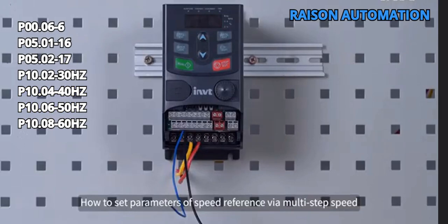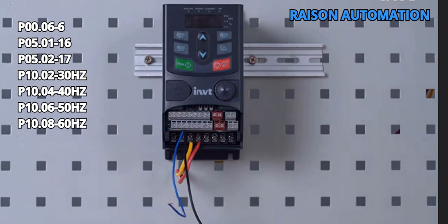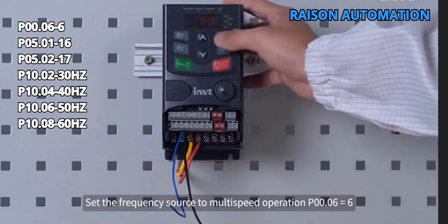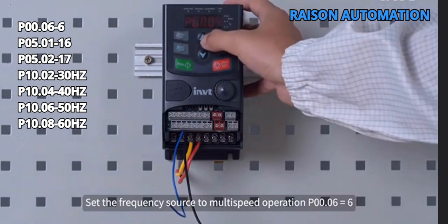How to set parameters of speed reference via multi-step speed. Set the frequency source to multi-speed operation P00.06 equals 6.